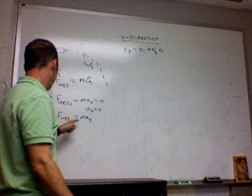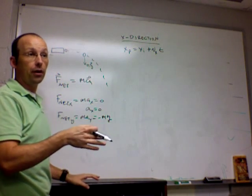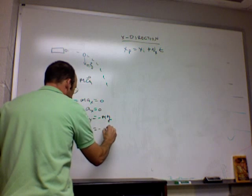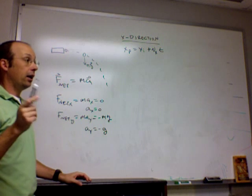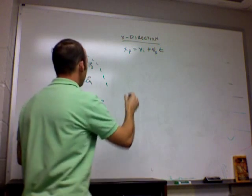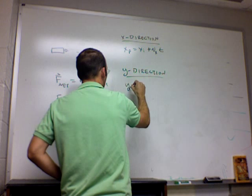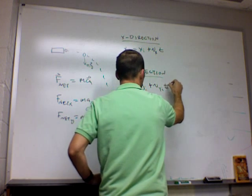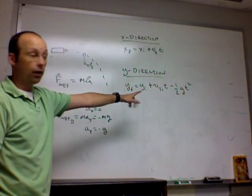In the y direction, I have the net force is going to be negative mg, where g is positive 9.8 newtons per kilogram. So I can solve this for ay equals negative g. So that's acceleration in the y direction. So now I have a constant acceleration, I can use the kinematic equations. So in the y direction, I have y final equals y initial plus v y initial times t minus one-half g t squared. Just your plain kinematic equation, free fall.